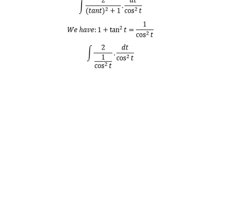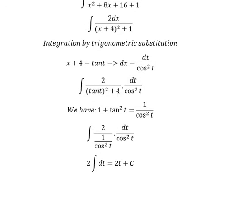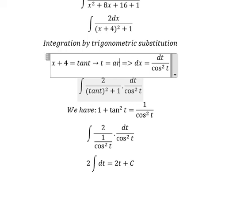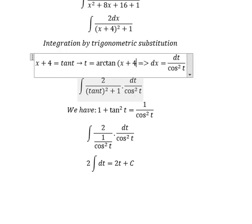And you just have the integral of dt, and you will get 2t + C. Now we need to convert t back to x, so t equals arctan(x + 4).